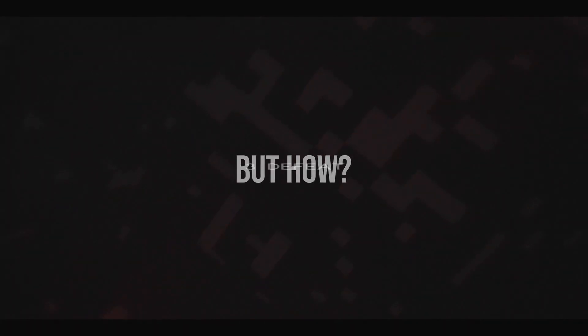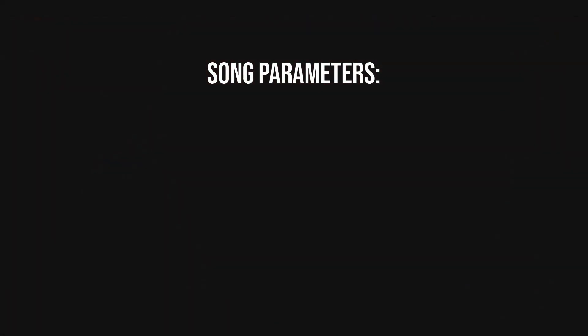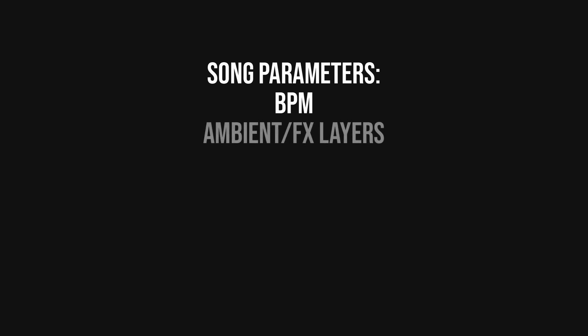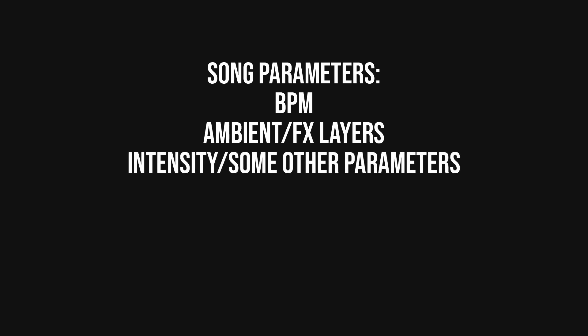You might wonder how the generation system fills in these structures with something resembling actual music. Whenever a request comes in to generate a new song, a few things happen beforehand. First, it randomizes a couple of song parameters that guide the generation — for example, it randomizes the BPM, how many ambient and effects layers there should be, and the intensity of the song, which increases or decreases the chance of a blast beat being generated, among other parameters.